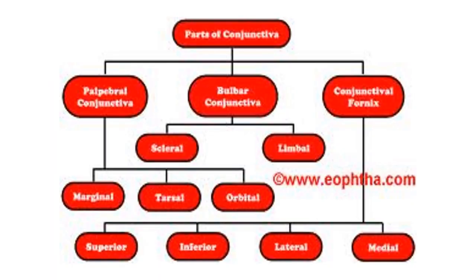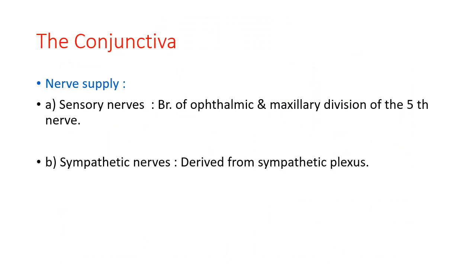The parts of conjunctiva include palpebral conjunctiva, bulbar conjunctiva, and fornical conjunctiva. Within the palpebral conjunctiva you can have marginal, tarsal, and orbital regions. This description of conjunctiva can be asked as a short note in examinations.